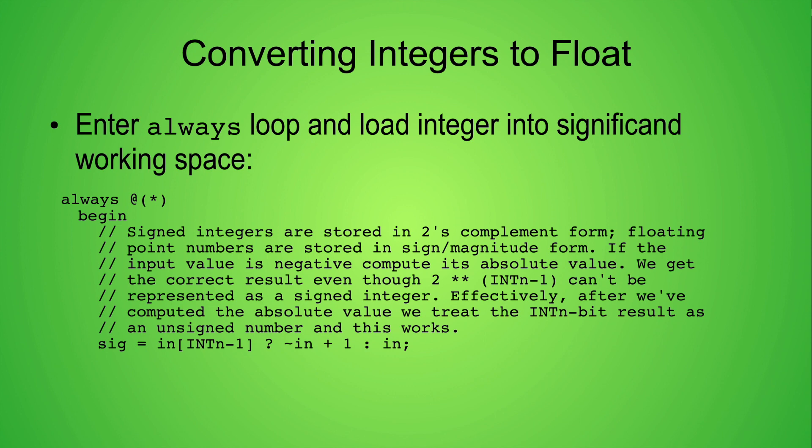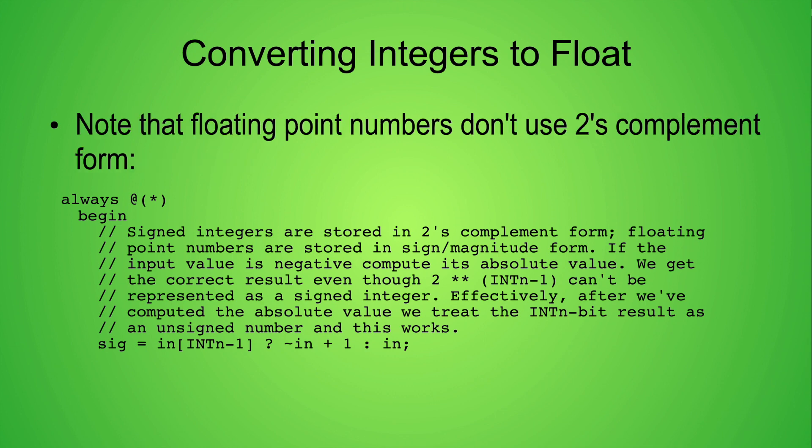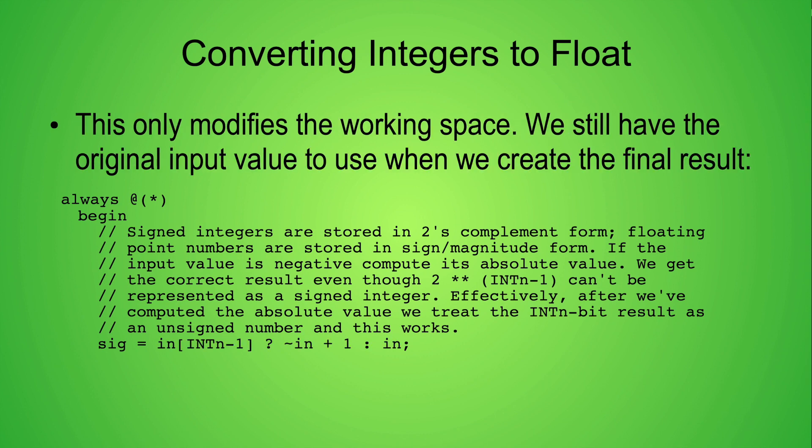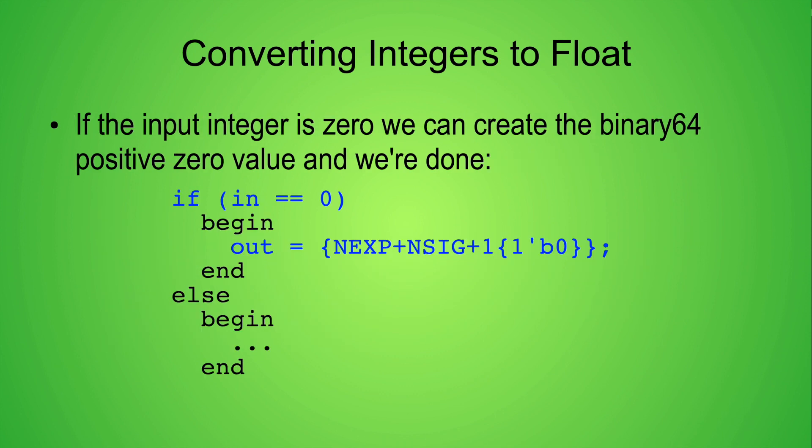The code in this slide shows several different operations. It starts by loading the integer input value into the SIG working space. Negative integers are stored in 2's complement form. 2's complement form isn't useful for floating point numbers. Instead, floating point numbers are stored as sign and magnitude values. The IN integer value needs to be tested for being a negative number. If the input integer is negative, we need to take its absolute value. Don't worry, we will eventually use the sign data to create our binary64 output, but not yet. Now we test to see if the input value is zero. If so, we construct positive zero as our output value, and we're done.